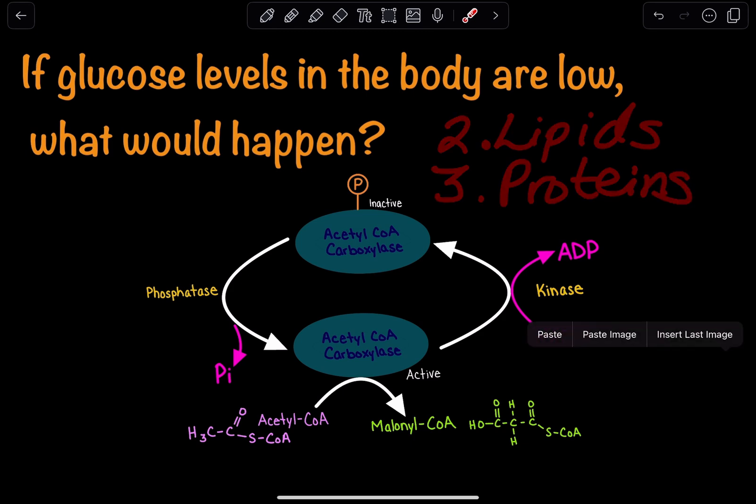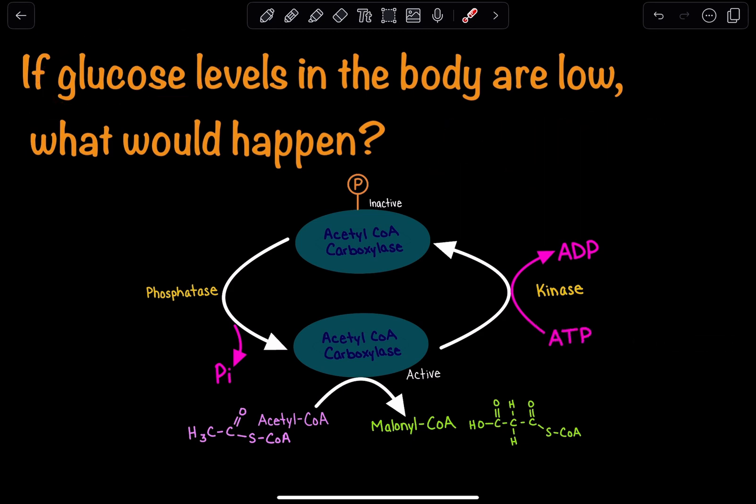If we're low on glucose, which is normally broken down through glycolysis to produce ATP in the TCA cycle and electron transport chain, we need an alternative pathway to produce energy.